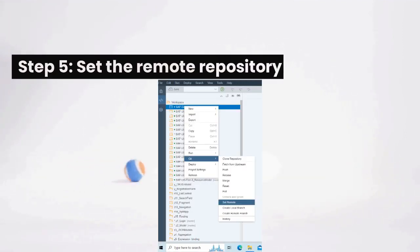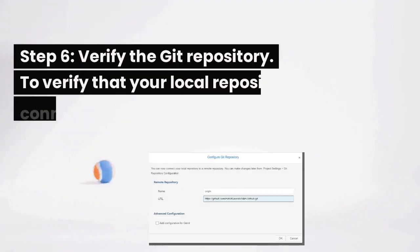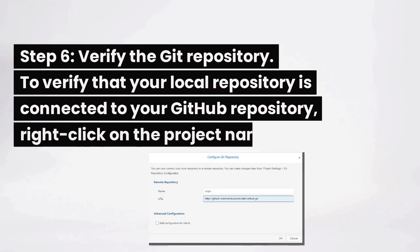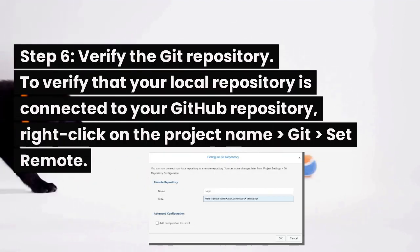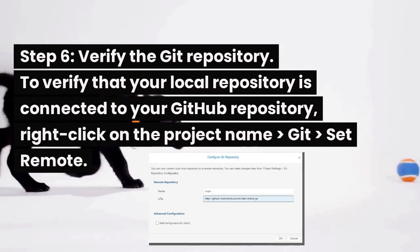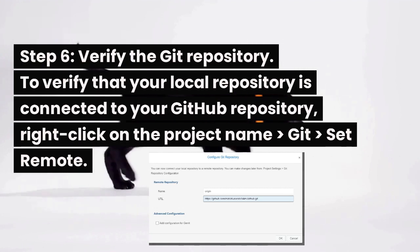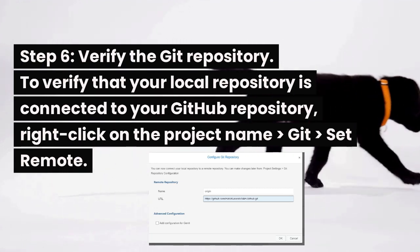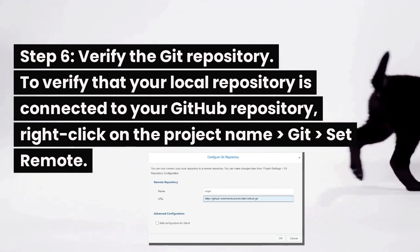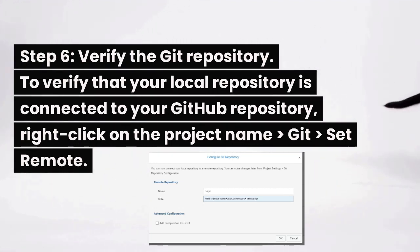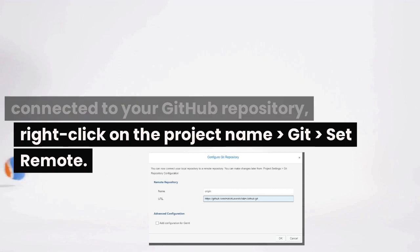Step 5: set the remote repository. Step 6: verify the Git repository. To verify that your local repository is connected to your GitHub repository, right-click on the project name > Git > Set Remote.